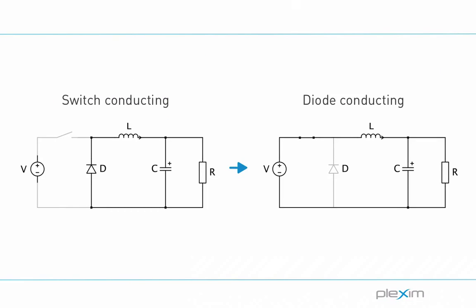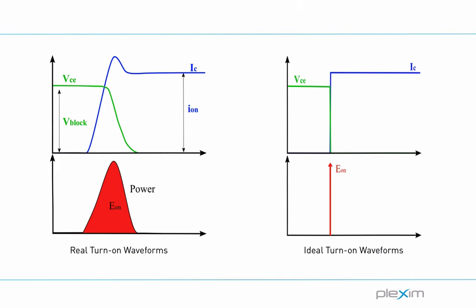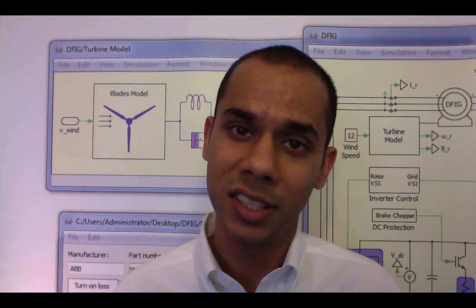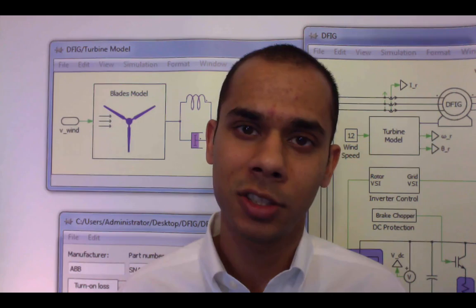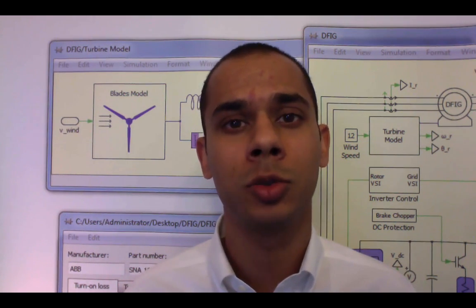In PLECS, ideal switches are used to represent power semiconductors. They are either in the on or off state. Toggling a switch is an instantaneous event that requires only two simulation steps, one right before and another right after the switching event. This makes the simulation of complex circuits very fast, especially if there are many power semiconductors present. However, when using instantaneous switches, there is no information about the transient waveforms during turn-on and turn-off. Thus, switching losses cannot be calculated by multiplying the voltage and current. In this video, we will discuss how the switching and conduction losses are modeled in PLECS in conjunction with the ideal switch concept.